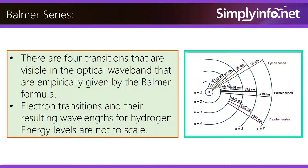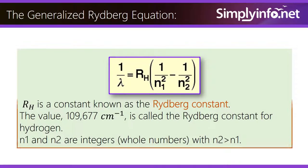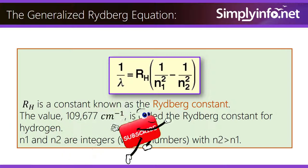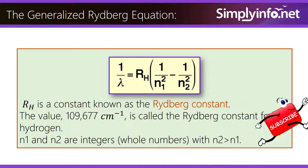Electron transitions and the resulting wavelengths for hydrogen energy levels are not to scale. The Generalized Rydberg Equation: 1 by lambda is equal to RH times (1 by N1 squared minus 1 by N2 squared), where RH is a constant known as the Rydberg constant. The value 109,677 cm to the minus 1 is called the Rydberg constant for hydrogen.